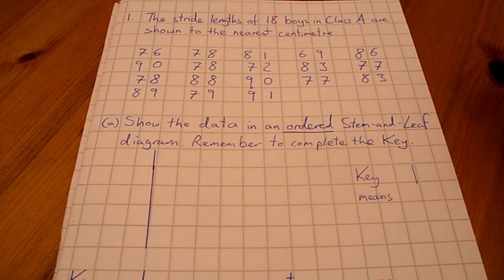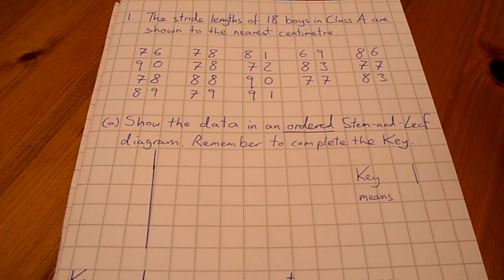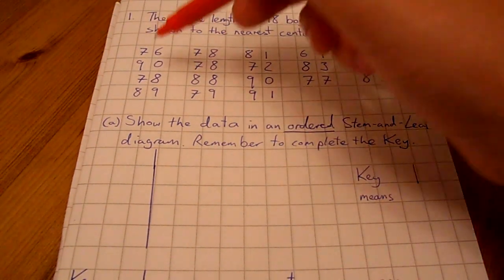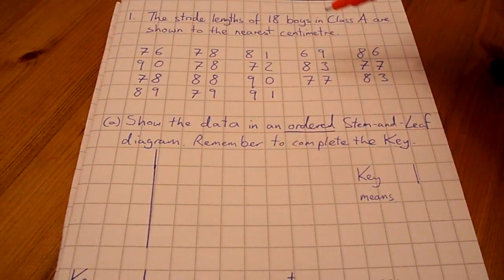Two key points there: ordered, so the data must be in order, and we must complete the key for four marks. This question is worth four marks in total. What we need to do is look through our list of data here. Think about which is our stem and which is our leaf.